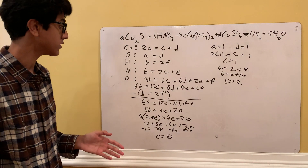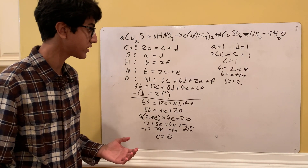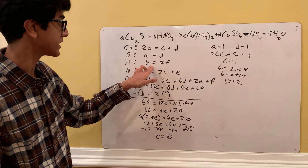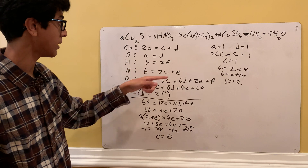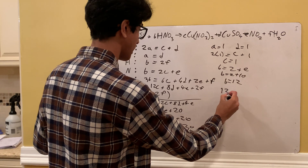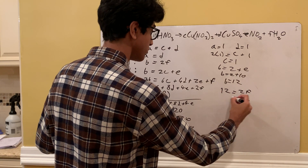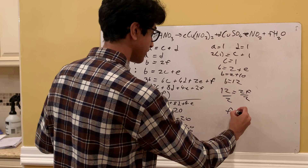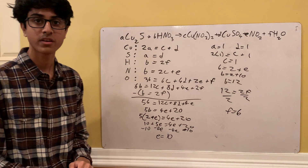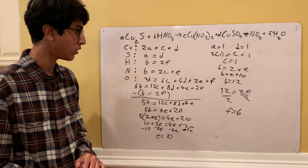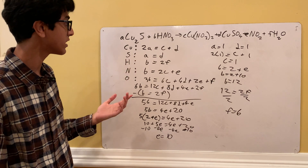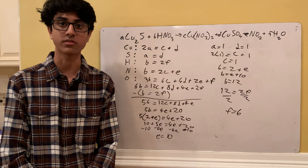There's just one variable left: F. From B = 2F, we plug in B=12: 12 = 2F, so F = 6. And there we have it — all variables solved: A=1, B=12, C=1, D=1, E=10, F=6. We balanced this complicated chemical equation without ever needing a calculator.